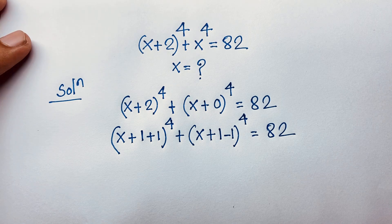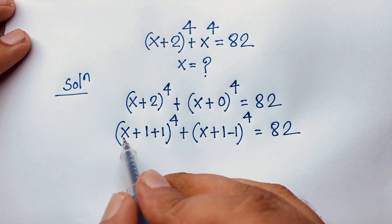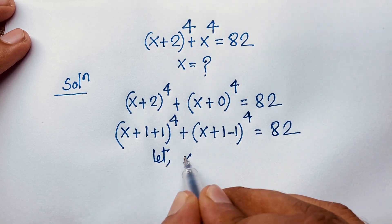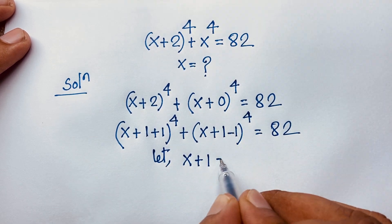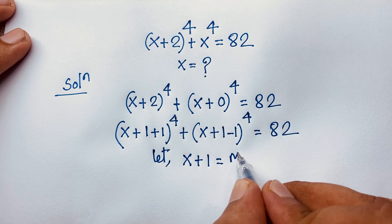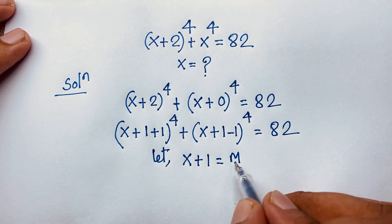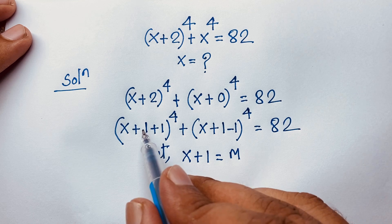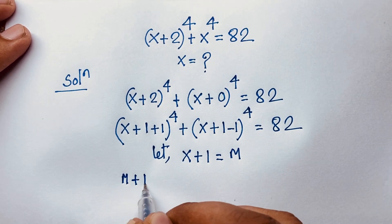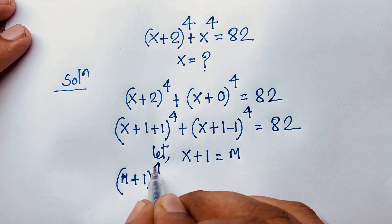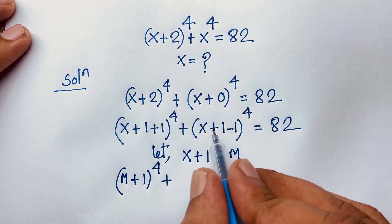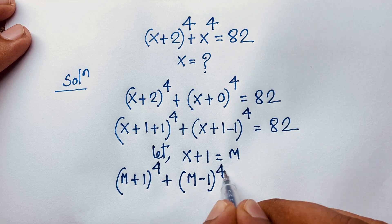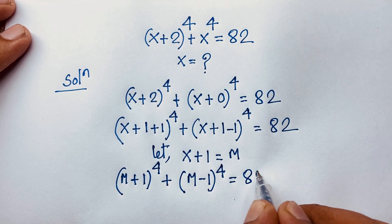Here, x plus 1, this is x plus 1. So let x plus 1 equal to m. Suppose that here is x plus 1 equal to m. Now if I put this value in, it will be (m + 1) bracket power is 4, plus — and this expression is also the same case — (m − 1) bracket power is 4, is equal to 82.